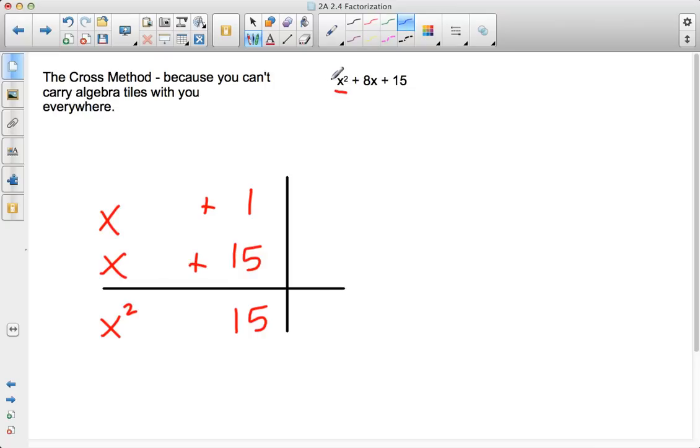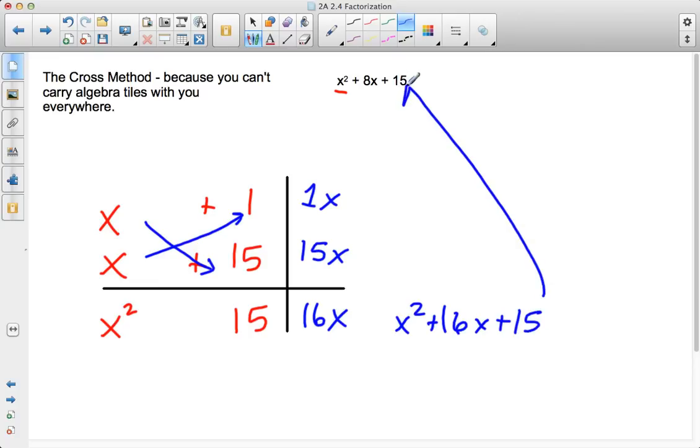Now, here's the next step. I'm going to check my work. So what I'm going to do is a little cross-multiplication here, and I get x times 1 is 1x, and x times 15 is 15x. So then what I do in this third column, I'm going to add them up, and I get 16x. So now I compare these values, x² + 16x + 15, to my original answer. Is that the same? Oh no, it's not the same.